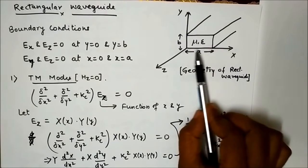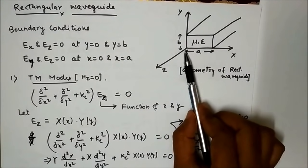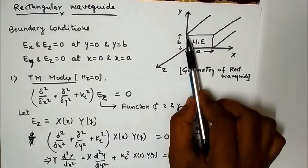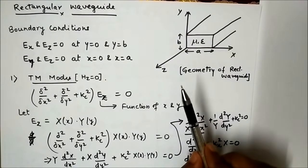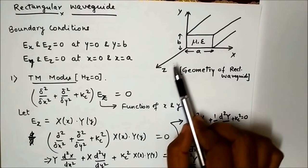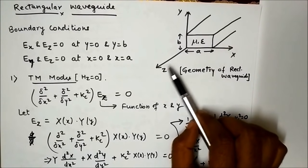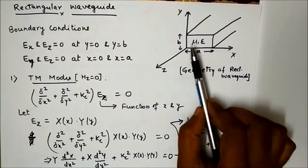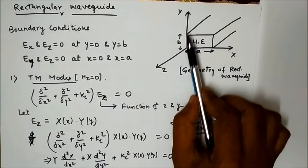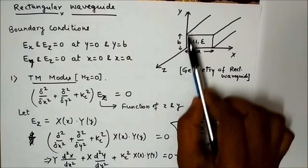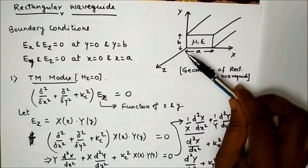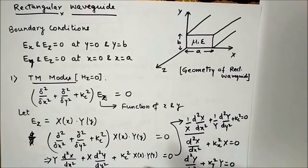The dimension of the rectangular waveguide: the width is 'a' and the height is 'b'. The electromagnetic wave is propagating in the z direction, and the cross-section of the waveguide is in the xy plane, so the wave propagates along z direction.